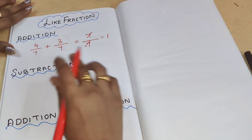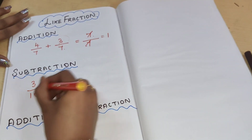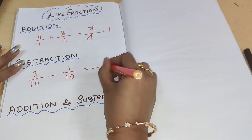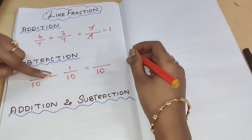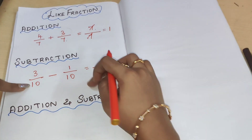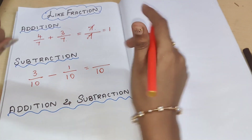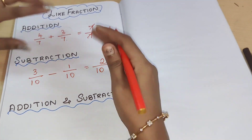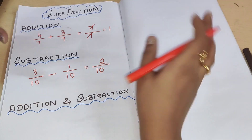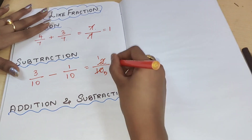Next, moving on to subtraction. In subtraction, let us take like fractions: 3 by 10 minus 1 by 10. We can just subtract directly for like fractions. In the answer, the same denominator 10 will come. Moving on to the numerator: 3 minus 1 is 2, so 2 by 10. Always give the final answer in simplest form. We can cancel: 2 fives are 10, so the answer is 1 by 5.